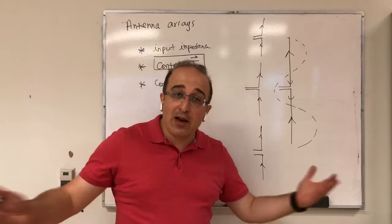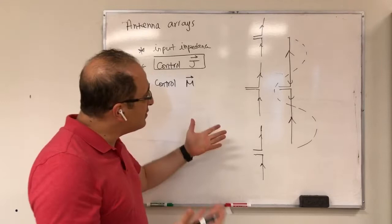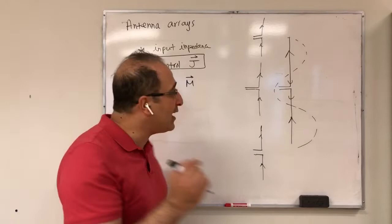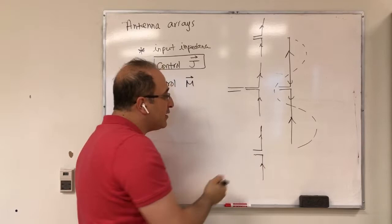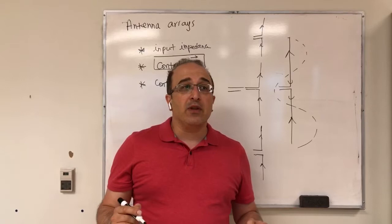Much of this course is about controlling currents. Using antennas in the form of arrays gives more control, but at a cost: with a single antenna you feed only one element, but with multiple antennas you now need a feeding network to feed several of them.